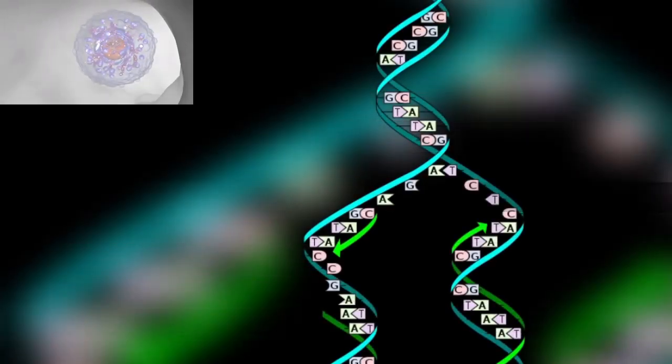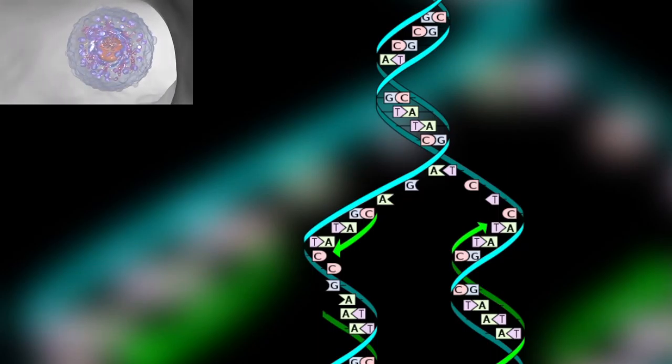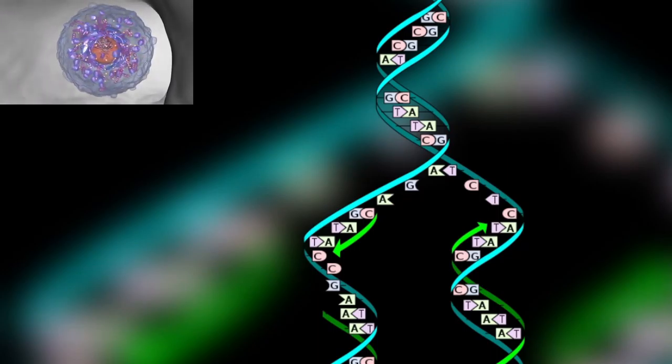Cells have emerged on our planet some 3.5 billion years ago. All living organisms are composed of one or more cells. All cells are created by mitosis and cytokinesis, processes which divide and split a single cell into two identical daughter cells.